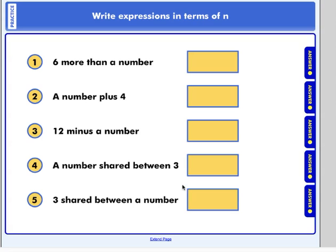You should have written an expression for each of these five. Let's look at number one. Six more than a number? n plus six. You could have written six plus n. Either way is fine. The second one. A number plus four. n plus four. Four plus n also works.